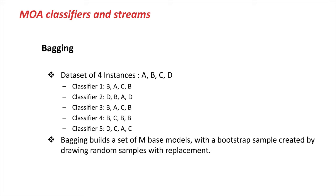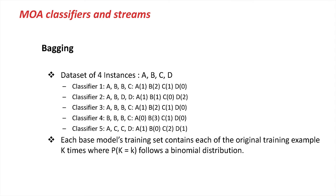There are two simple steps. First, we can look at our subsamples by sorting them, restoring the original order of the data. So with original order A, B, C, D: classifier 1 would see A, B, B, C; classifier 2 would see A, B, D, D; the extreme one would see B, B, B, B and C. The next step is to view this as every classifier seeing all examples in order A, B, C, D but with a weight attached. For the first classifier the weight would be 1 for A, 2 for B, 1 for C and 0 for D. The extreme classifier would have 0 for A, 3 for B, 1 for C, 0 for D.